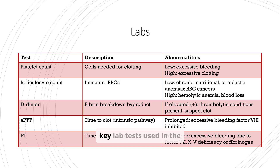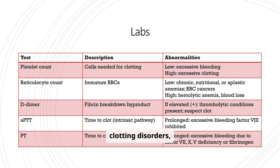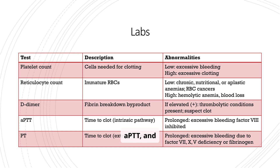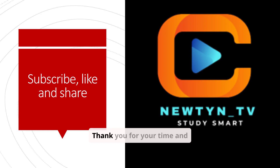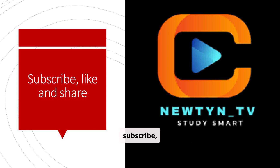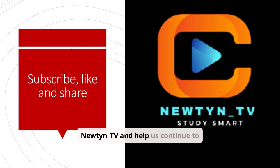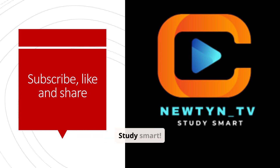This table summarizes key lab tests used in the diagnosis of bleeding and clotting disorders, including platelet count, reticulocyte count, D-dimer, APTT, and PT, along with their descriptions and associated abnormalities. Thank you for your time and attention. Don't forget to subscribe, like, and share this video to support Newton TV and help us continue to provide valuable medical education. Study smart.